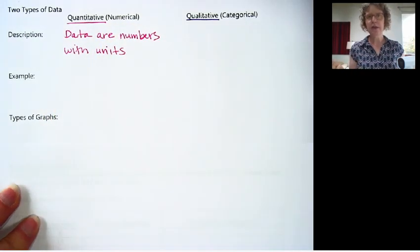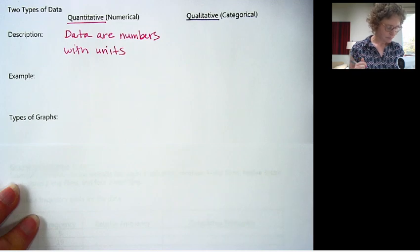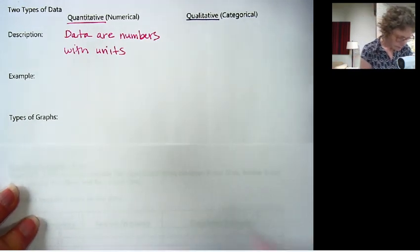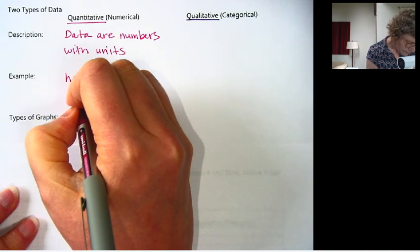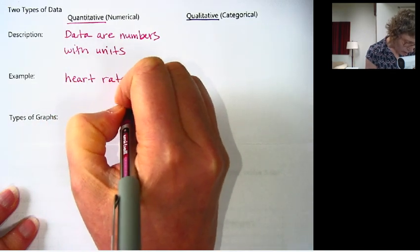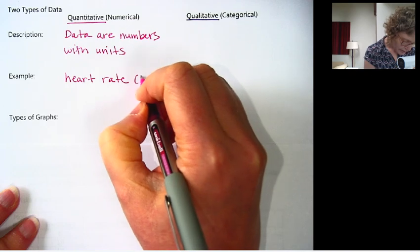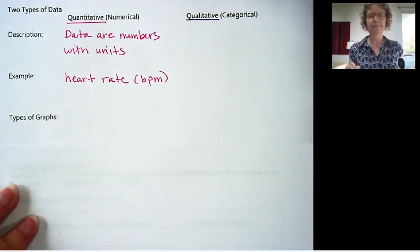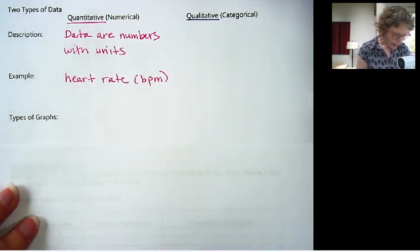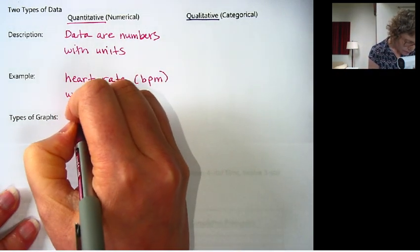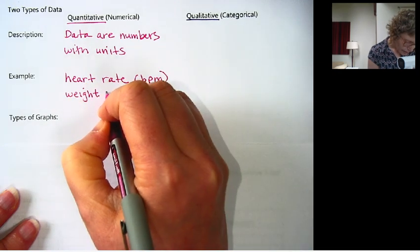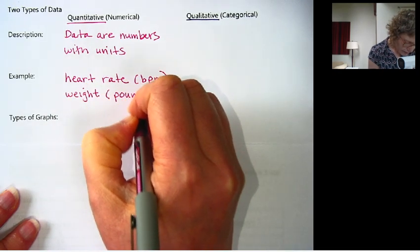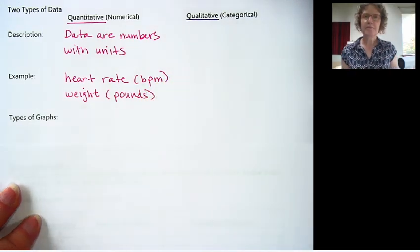It's usually something we're measuring or asking. An example could be, let's say we measured everyone's heart rate. Heart rate would be measured in beats per minute, BPM. Another one might be weight. If it was weights, we would probably measure it in pounds in the US, or kilograms in another country.